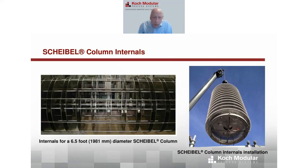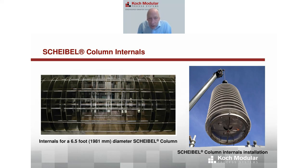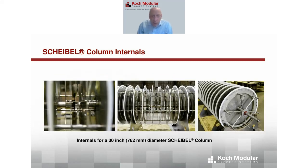Here are pictures of Scheibel column internals. On the left is about a six-and-a-half-foot diameter Scheibel column showing inner baffles and turbine impellers — in this case outer baffles are welded to the inside wall. On the right is a complete cartridge with outer baffles, inner baffles, and impellers all together. You can see the Teflon edge that seals each stage at the column wall. The smaller 30-inch diameter version also shows the impeller blades, outer baffles, and inner baffles clearly.